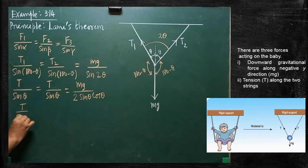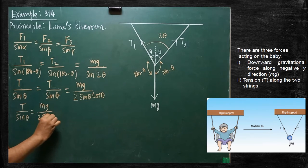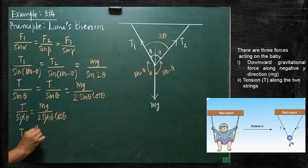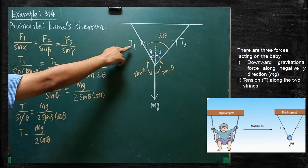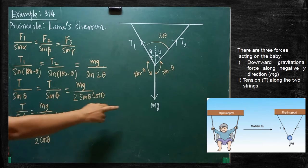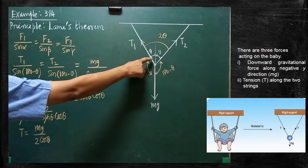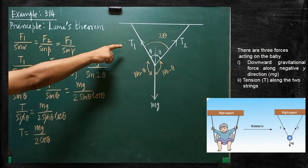T divided by sin theta equals mg divided by 2 sin theta cos theta. The sin theta cancels on both sides. Therefore, T equals mg divided by 2 cos theta. So that is the formula. With the help of this, we are able to measure the tension acting along the string. By knowing the value of mg — the child's mass and g equals 9.8 — and provided the theta value is known, we can calculate the tension.